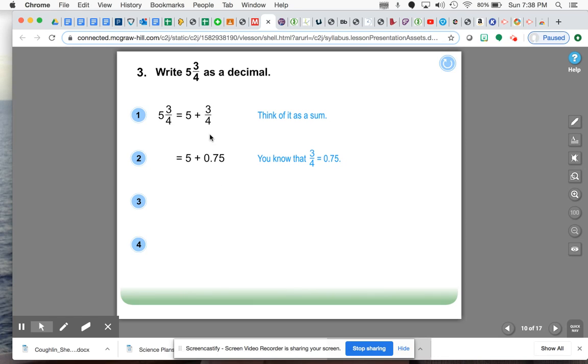If you do that, you would get—think of it as three quarters—you can say this is three quarters, which is the same as saying 75 hundredths. If you think of it as money, it's 75 cents, and you would get 5 and 75 hundredths.